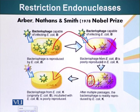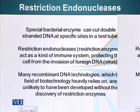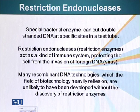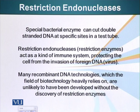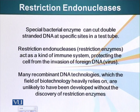They found that special bacterial enzymes can cut double-stranded DNA at specific sites in the test tube. It so happens these bacteria — all cells — can modify their own DNA, and their chemically modified DNA serves as a protective mechanism. So cells recognize their own DNA, and any foreign DNA that enters the cell without those chemical modifications is destroyed.